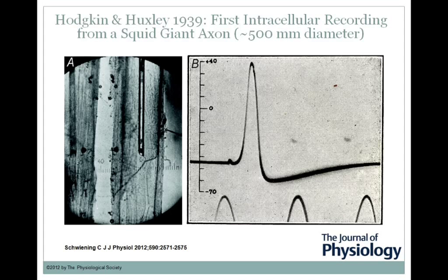Hodgkin and Huxley made the first intracellular recording of an action potential in 1939. They used a squid giant axon, and you can see the original trace right here. They chose the squid because, as the name implies, its axons are giant.